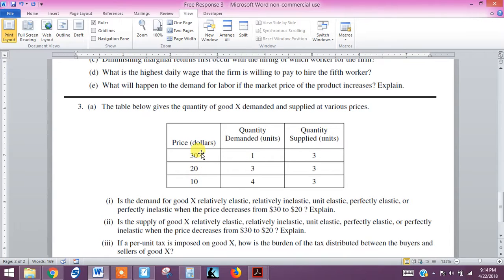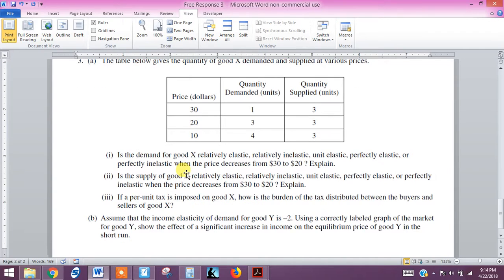So this is our demand curve right here. As price goes down, quantity demanded goes up. So this is our downward sloping demand curve, and we want to determine the elasticity of good X when price changes from $30 to $20. So when price drops from $30 to $20, what is the price elasticity of demand?